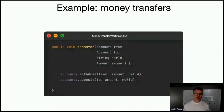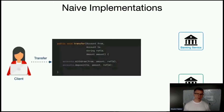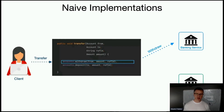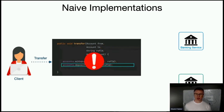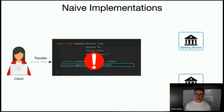Let's look at a real example. Everybody uses money transfers as an example of a transaction. Now that we're moving to microservices, if you want to implement transferring money — withdrawing from one banking service and depositing into another — naively you write a service that does that. The problem is there are no transactions across services, so if your service fails in the middle of a deposit operation, you end up in an inconsistent state. This is a very serious problem.